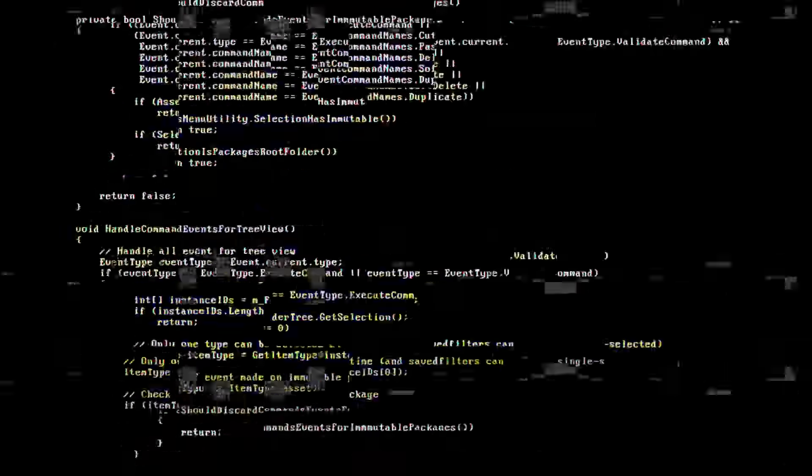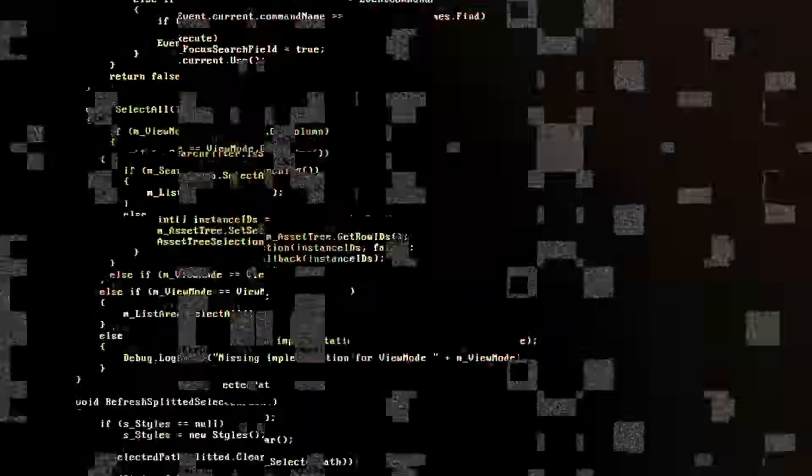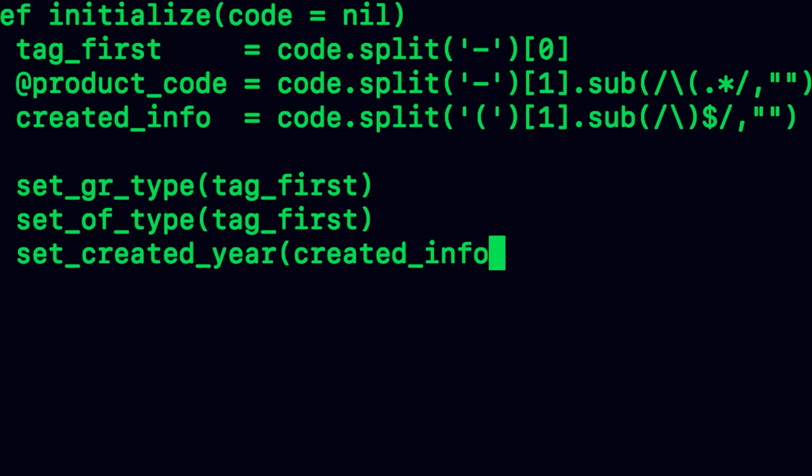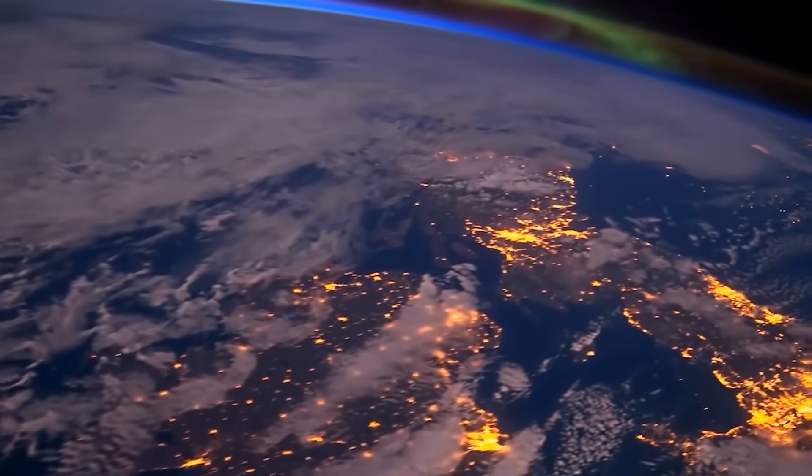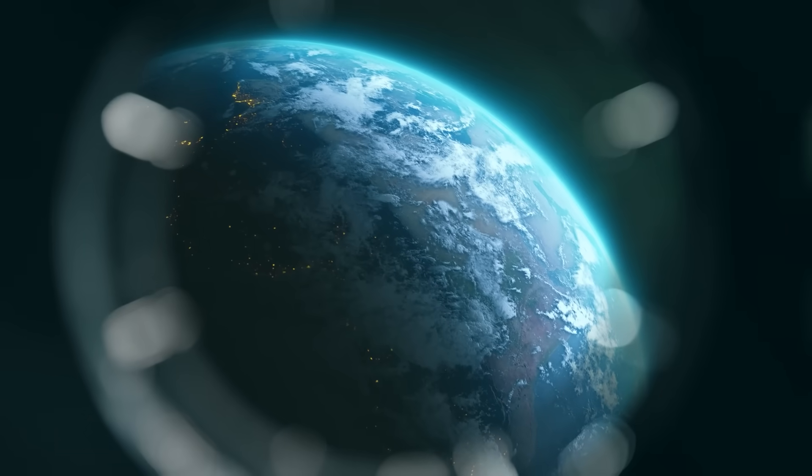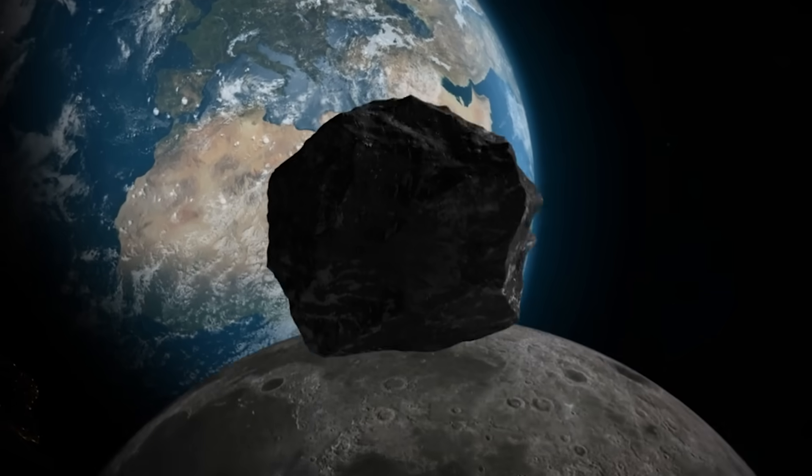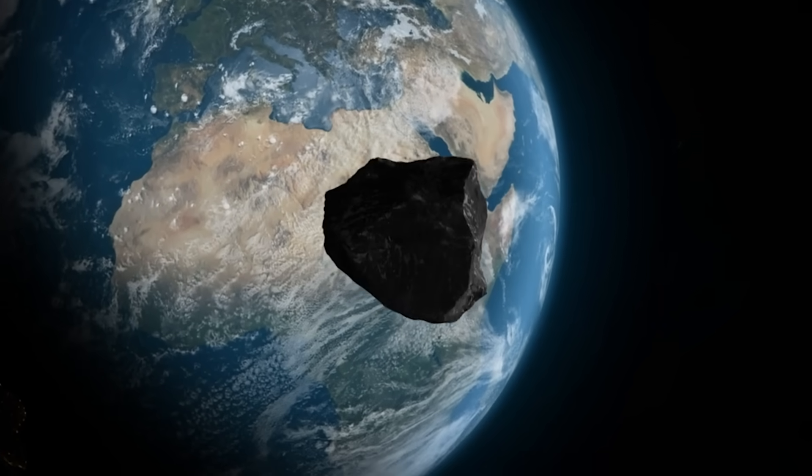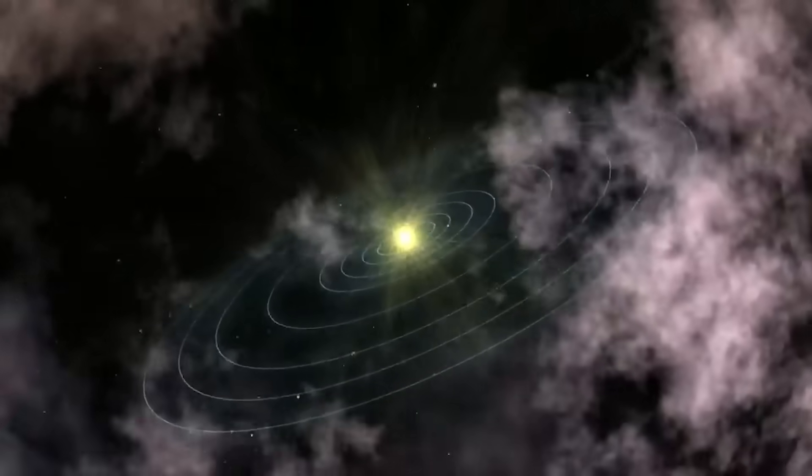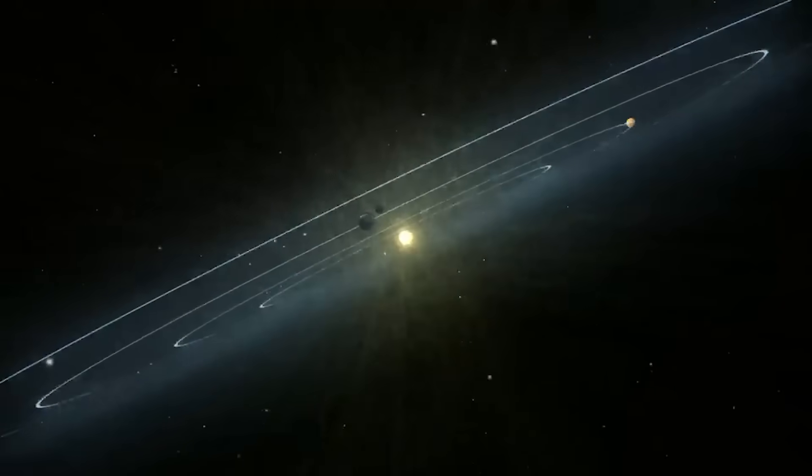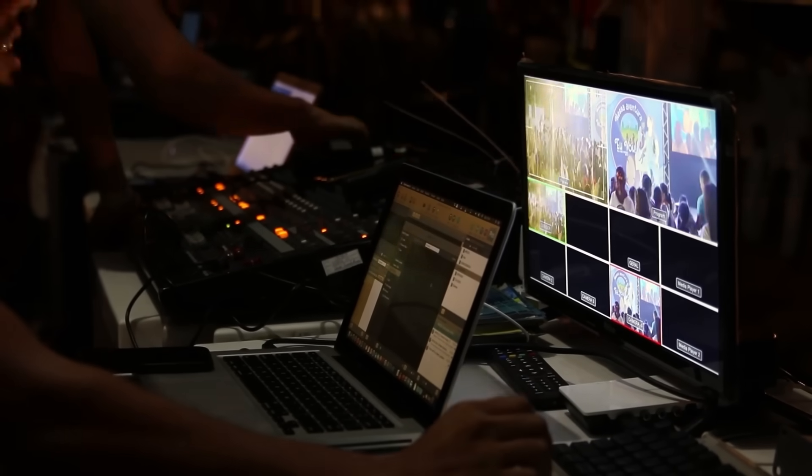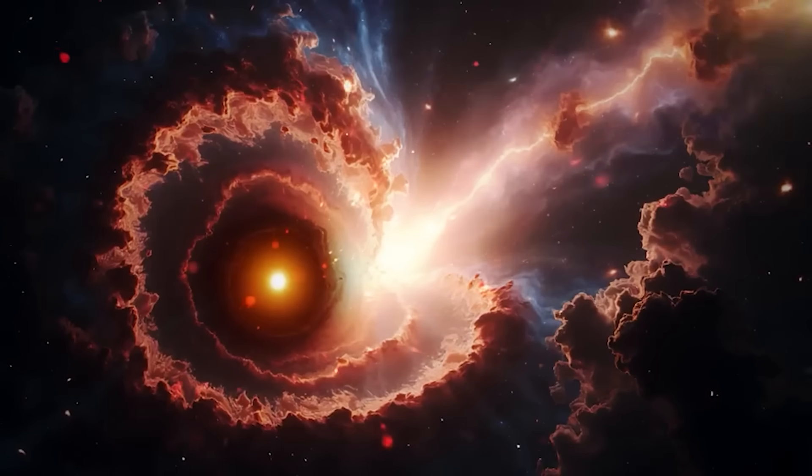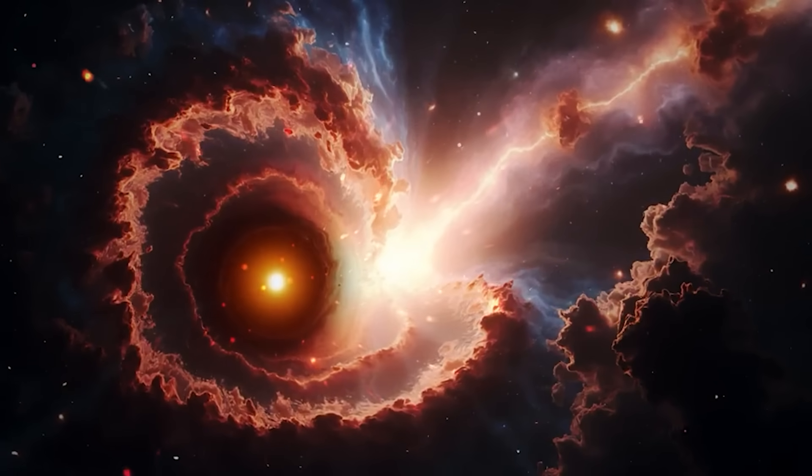At first, analysts dismissed it as corrupted data. But as the reconstruction continued, something horrifying became clear. The coordinates weren't for Jupiter. They were for Earth. A trajectory marker, precise to within kilometers, indicating where 3I Atlas would intersect with our planet's orbital plane in the year 2031. The object hadn't escaped the solar system. It had set a return point.